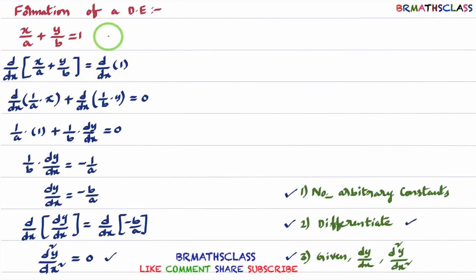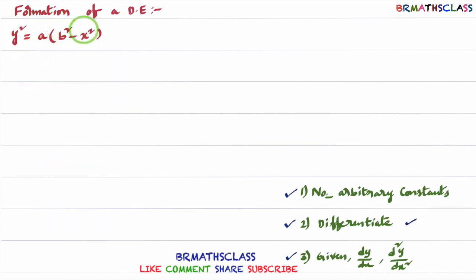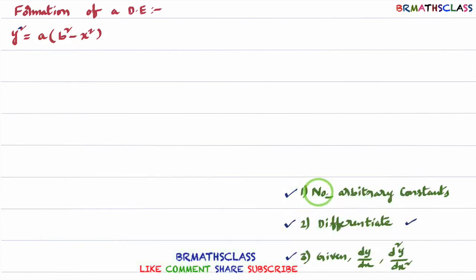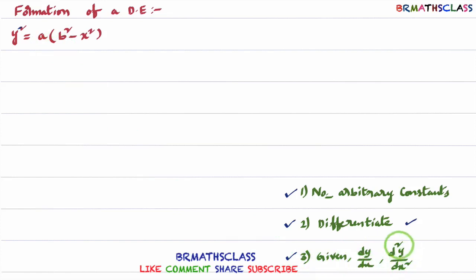Now we will try to understand this more clearly with one more problem. Observe this curve — we need to form a differential equation of it. First, identify how many arbitrary constants are present. Here A is an arbitrary constant, B is an arbitrary constant. You may think 2 is also arbitrary, but 2 is a fixed constant. So two arbitrary constants A and B are present. We differentiate two times. After two differentiations, if A and B are eliminated that is the answer; if not, we use the given curve and the differentiation results to eliminate them.